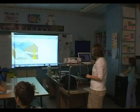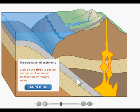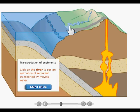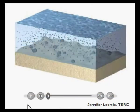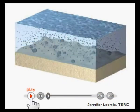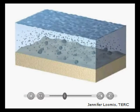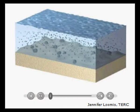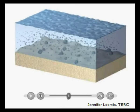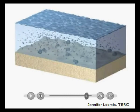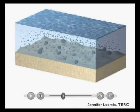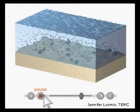It says transportation of sediments — click on the river to see an animation of the sediment transported by moving water. Whoa. There goes the sediment. It's erosion. In the first box, with your group, you're going to describe what the animation shows.